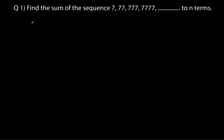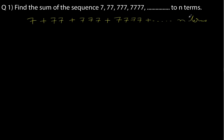Let us try to solve some questions. We need to find this sum. If you look at it, it is not directly in terms of a GP — 77 divided by 7 is 11, but 11 times 77 would be 847, so the ratio is not 11. This is not directly in the form of a geometric progression. But there is a trick you can use to bring this into the form of a GP. Let us denote this sum as S_n.